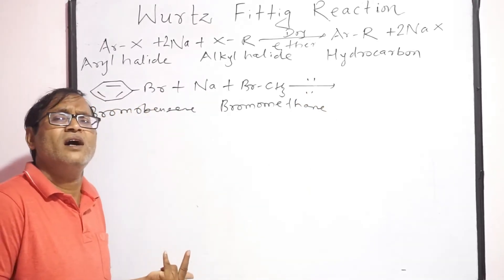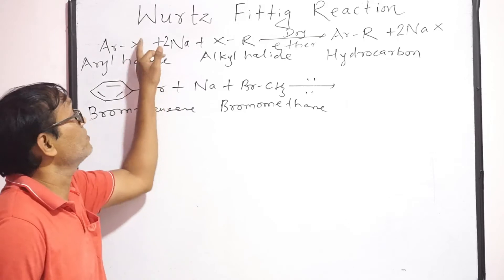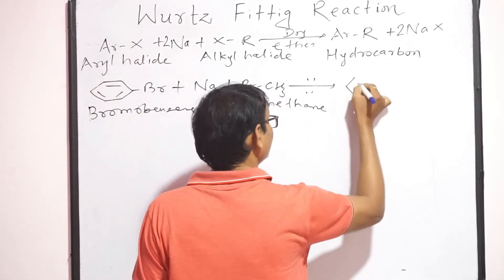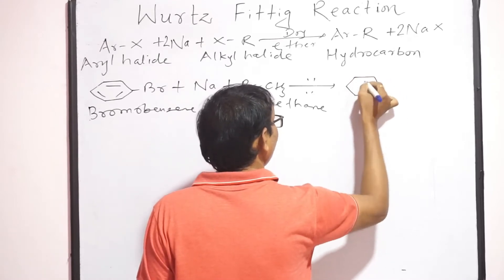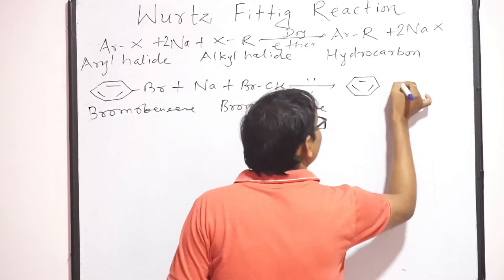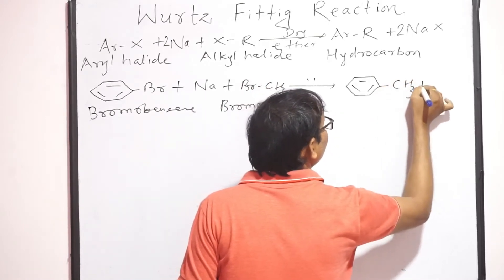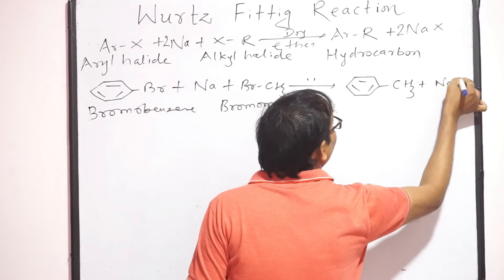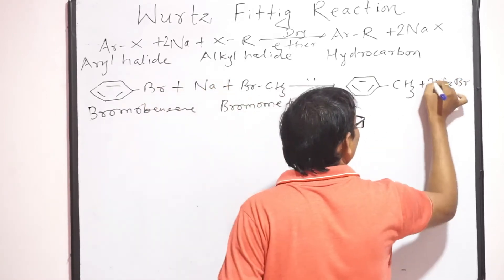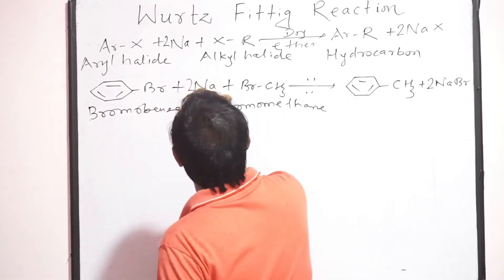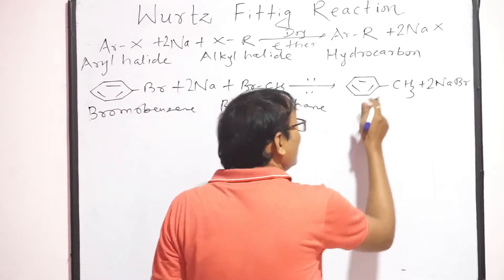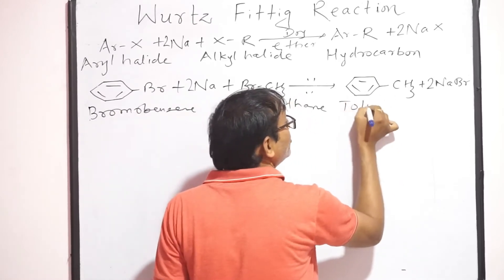Ab product kaise banana. Easily isse bana sakte ho, agar aapko ye reaction samajh mein aaya to. Yaha hydrocarbon part konsa rahega - benzene ring. Yaha hydrocarbon part konsa rahega - CH3. In dono ko jod dena, plus byproduct rahega NaBr. Do Br hai, yaha do likhna padega. Enne yaha do likhko equation balanced ho gaya. Therefore, ab iska naam, iska naam hume likhna padega. Isko kehte hain toluene.